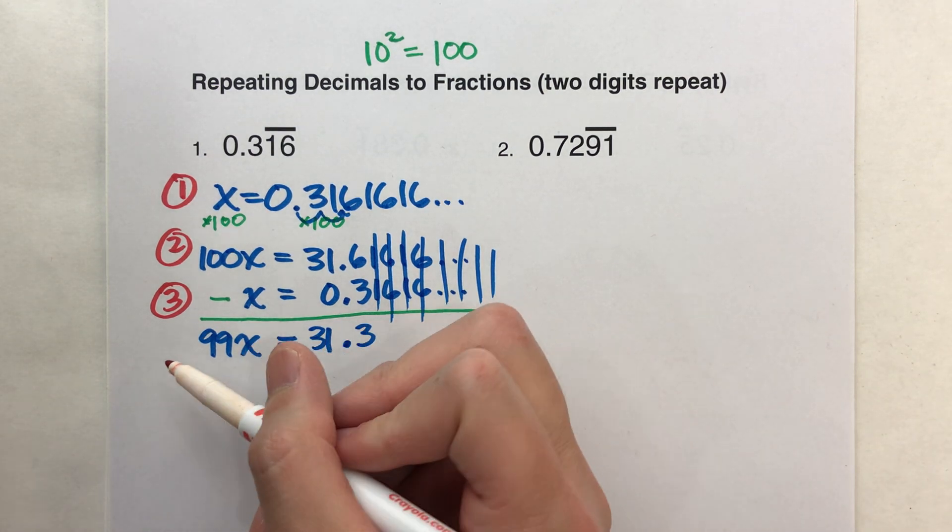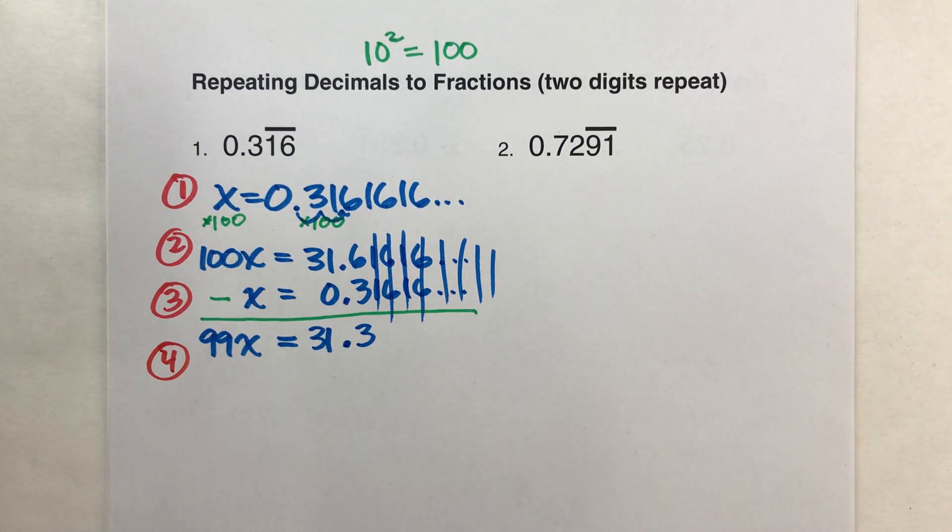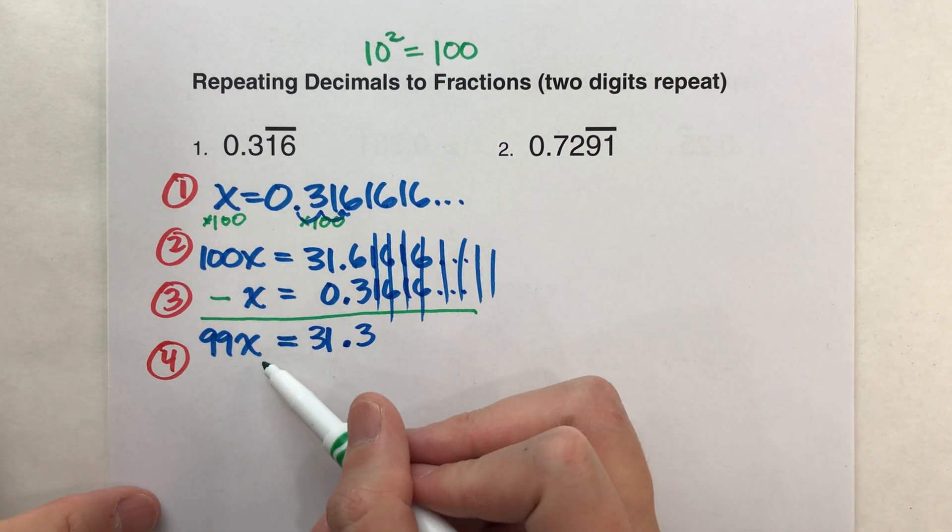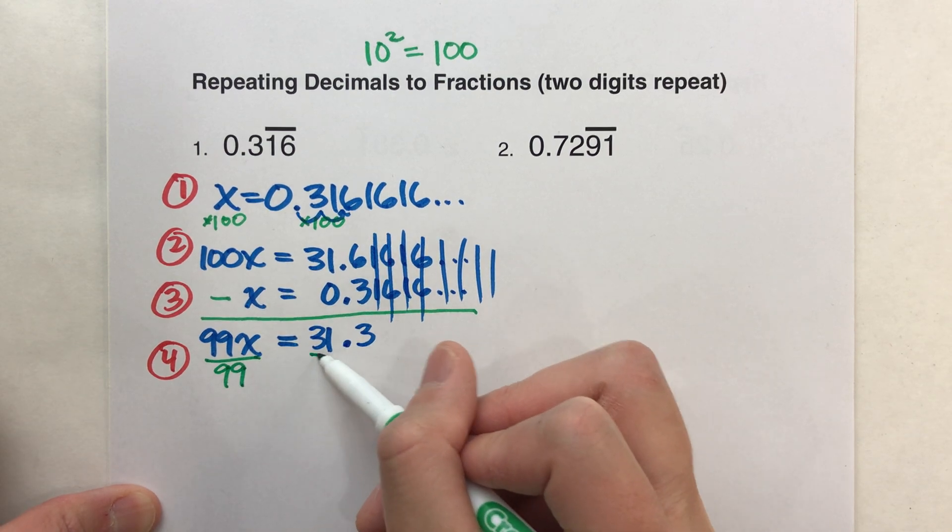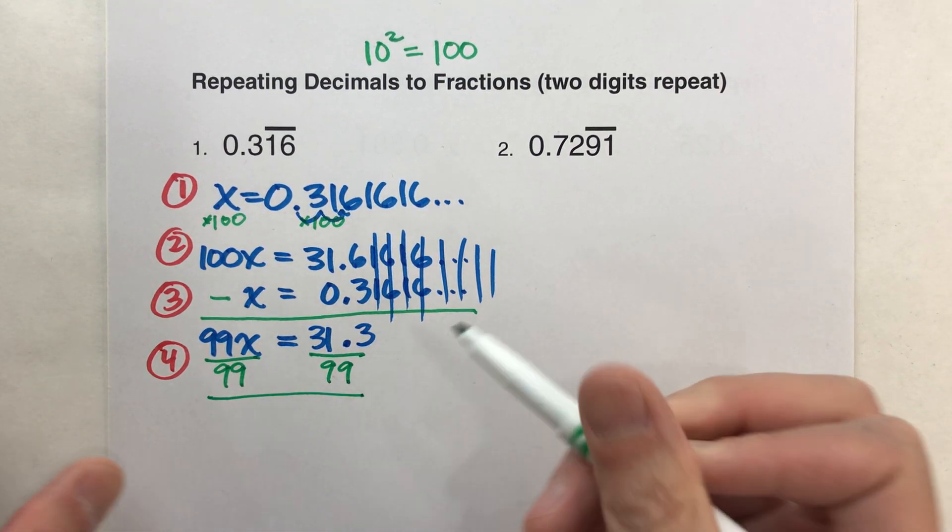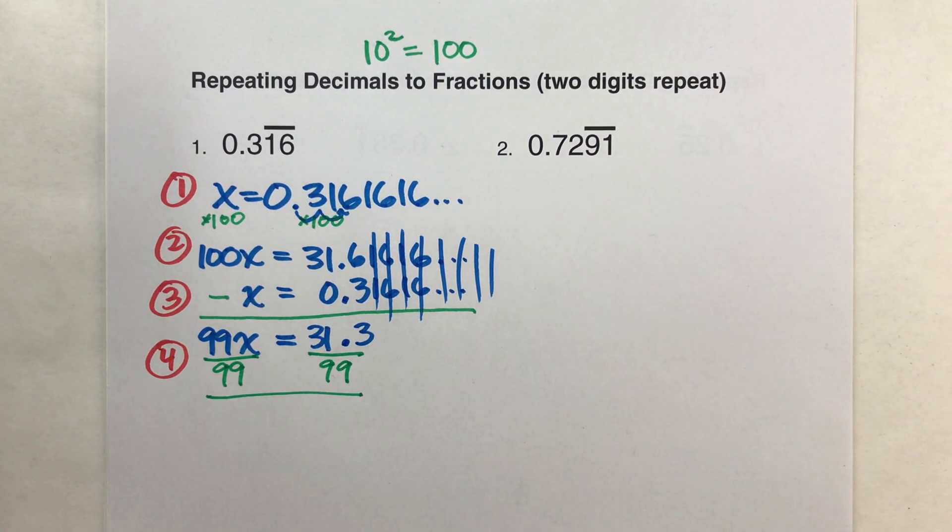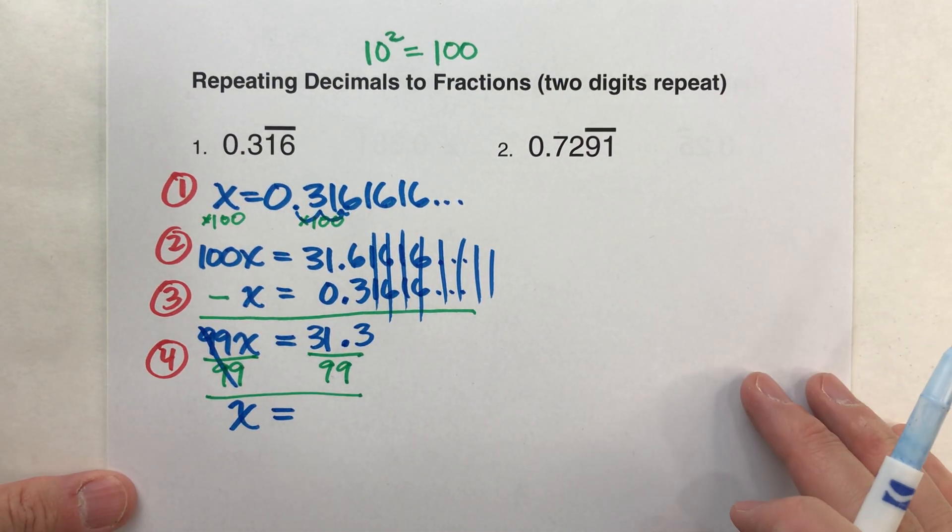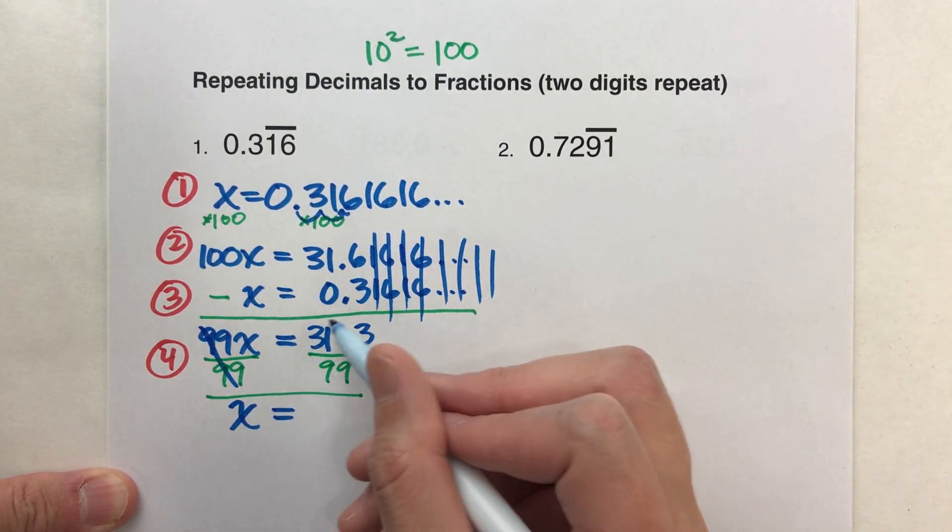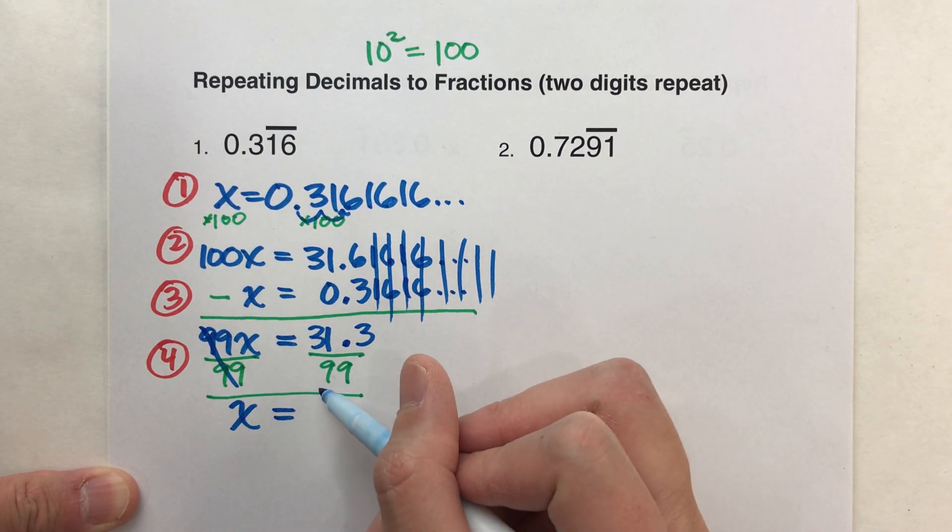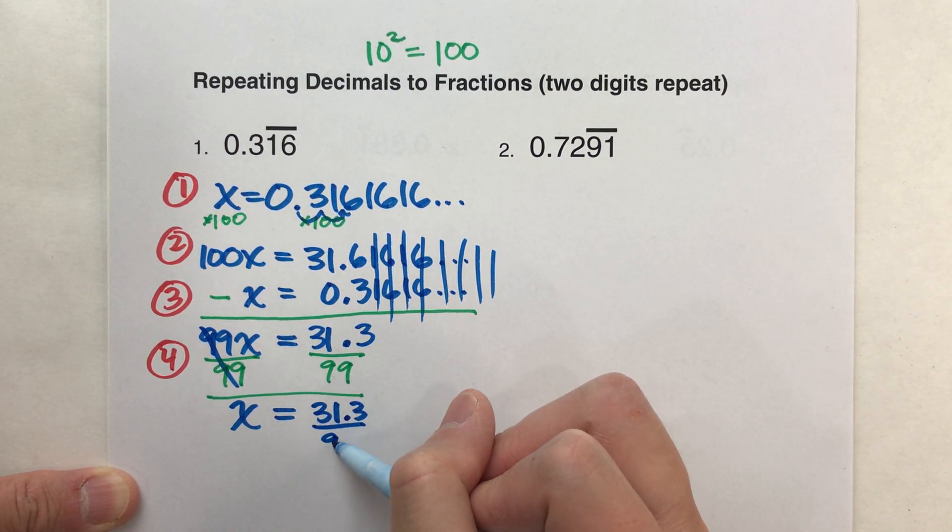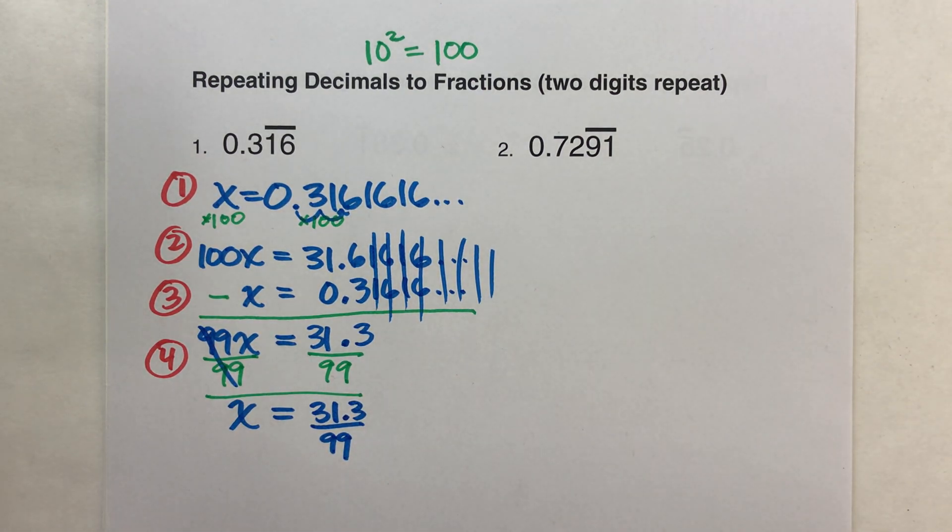So we're about a step away here because step four, solve for x and then simplify your fraction. To get x by itself, I need to divide by 99 on both sides of the equal sign. When I do that, the 99s undo each other, so I get x equals. On the other side, I want my answer as a fraction, so I'm going to keep it in this fraction form. 31.3 divided by 99 is the same as 31.3 ninety-ninths.